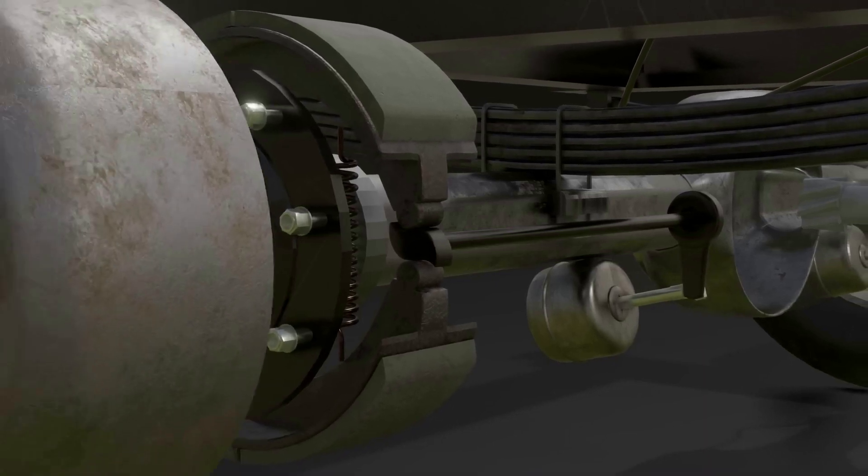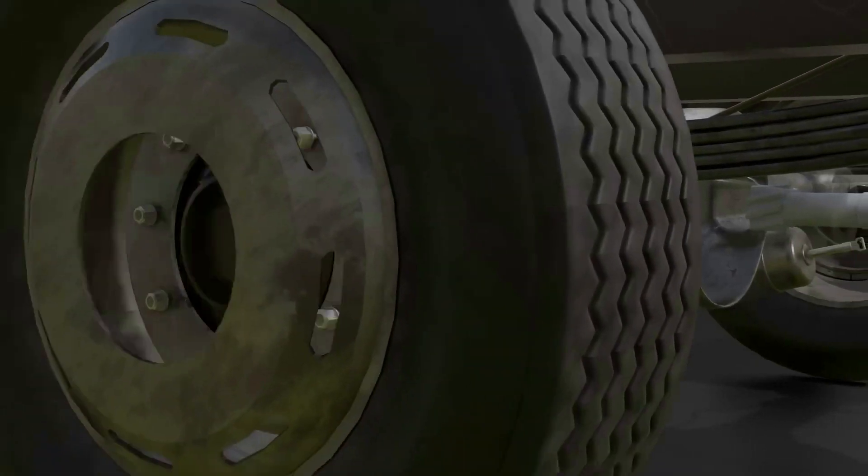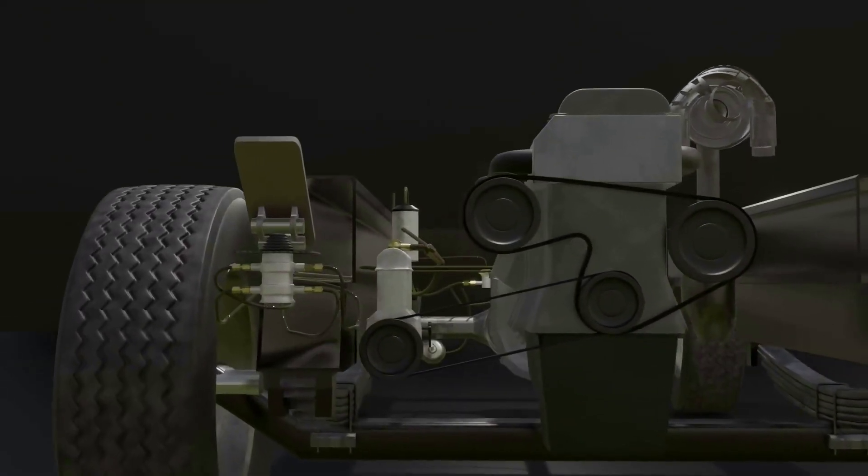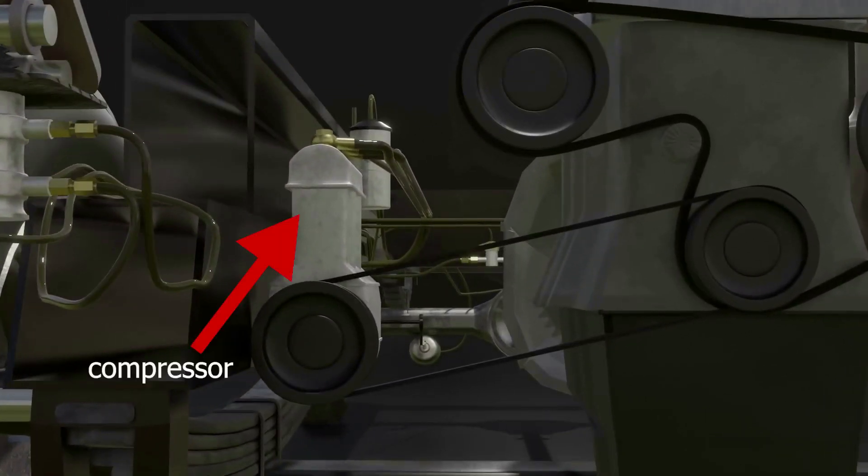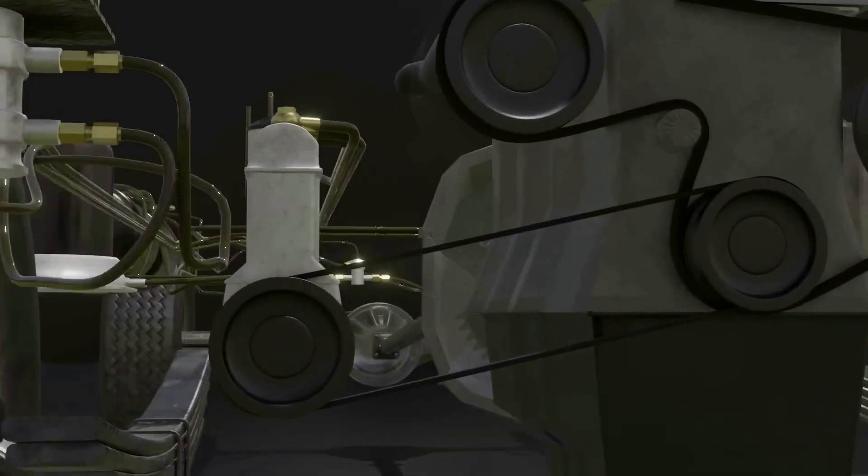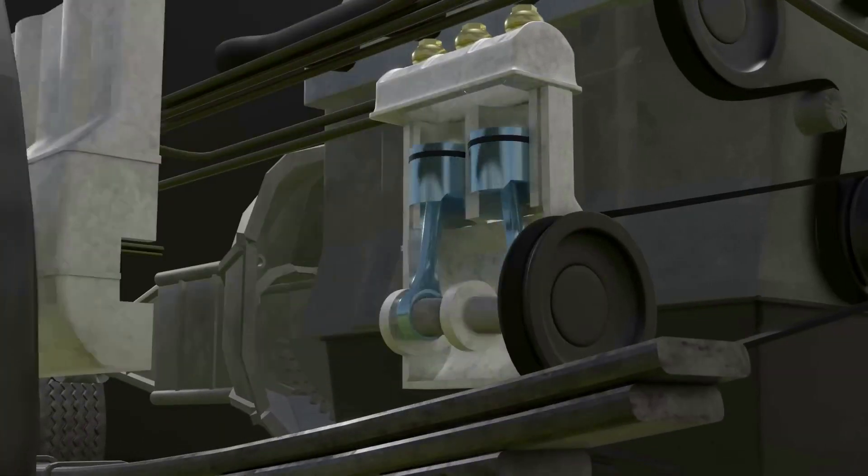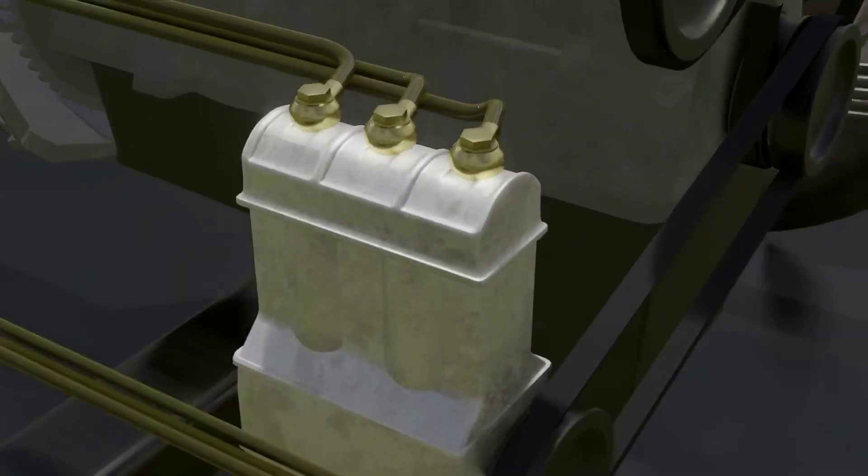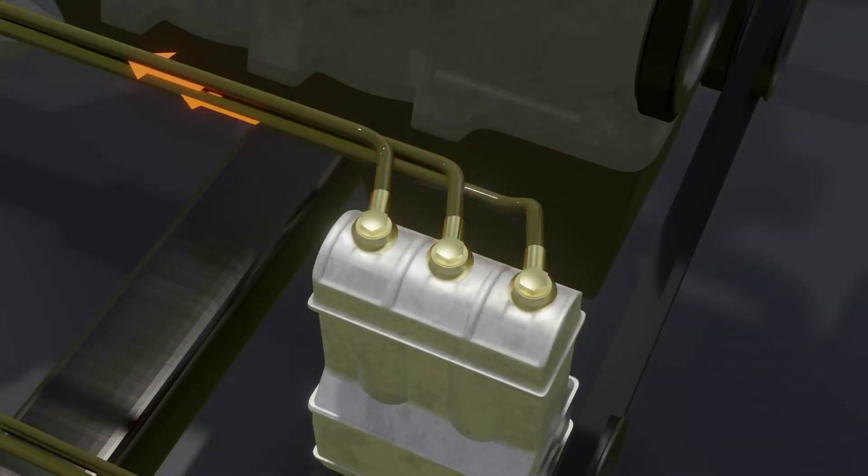The air compressor supplies energy to the air braking system. For a deeper explanation, let's start from the engine. Here we see an air compressor. The air compressor is connected to the engine pulley by a fan belt, so the air compressor works when the engine runs. The compressor supplies air pressure to the air braking system.